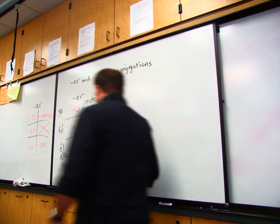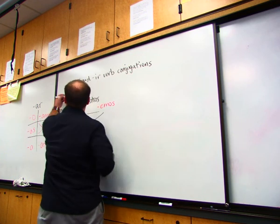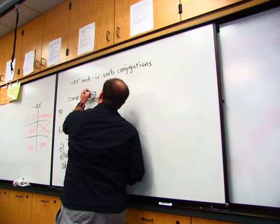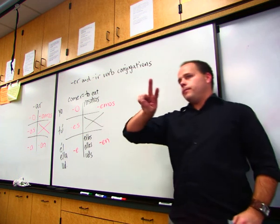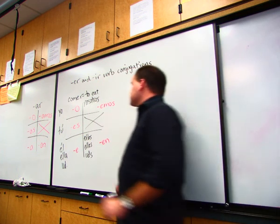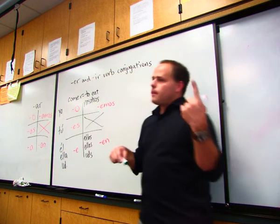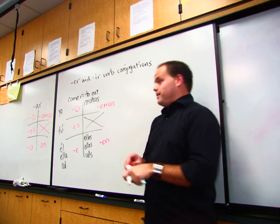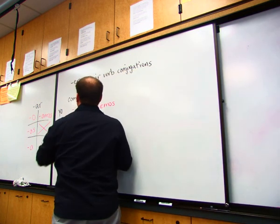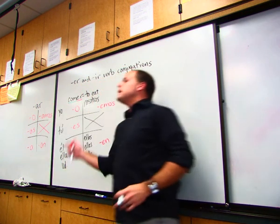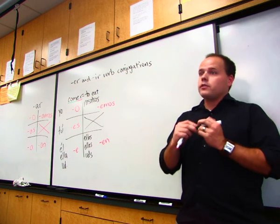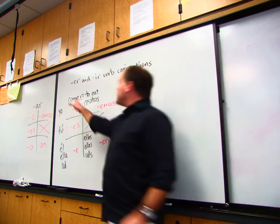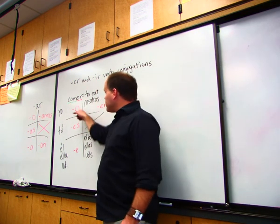So those are our endings for regular ER verbs. For an example, what's an ER verb we know? Let's use comer. What does comer mean? To eat. Two parts to a verb. One of them is the ending. What's the other part? The stem. The ending is the ER. The stem is the rest of the word, the beginning of the word. It's called a stem because what happens to it during conjugations? Nothing happens. The stem stays the same.